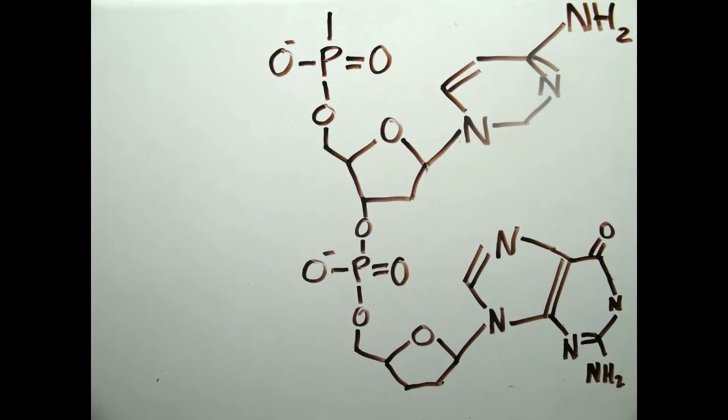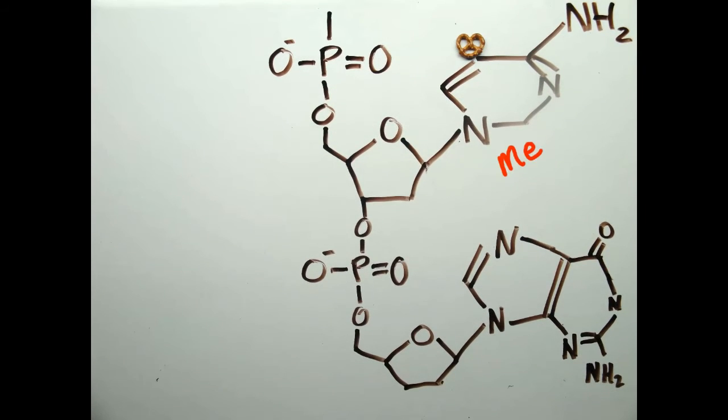A methyl group is added to the 5th position of the cytosine ring to form 5-methylcytosine.